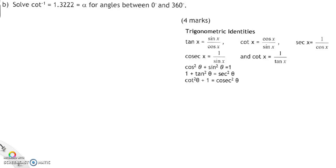Now part B, solve cot inverse equals 1.3222 equals alpha for all angles between 0 and 360. Now first of all, I think this is a misprint because we're looking for angles. I think it's a misprint anyway.